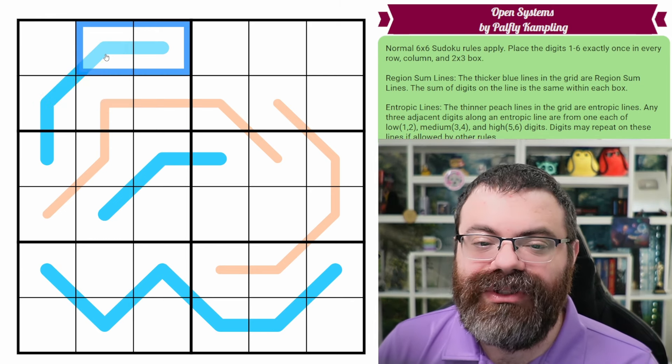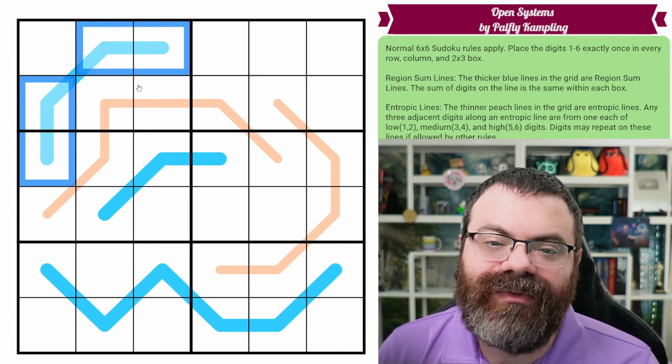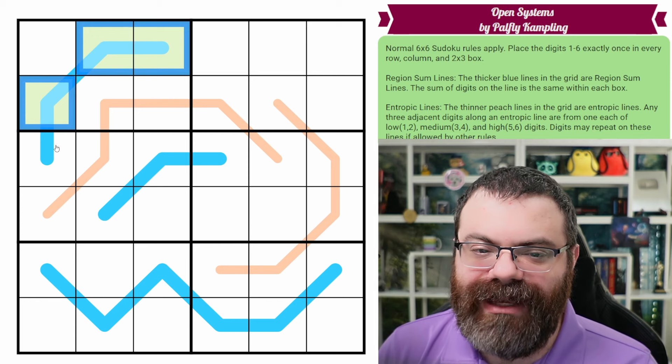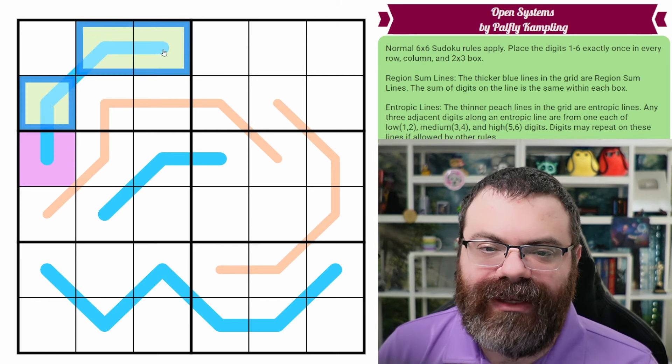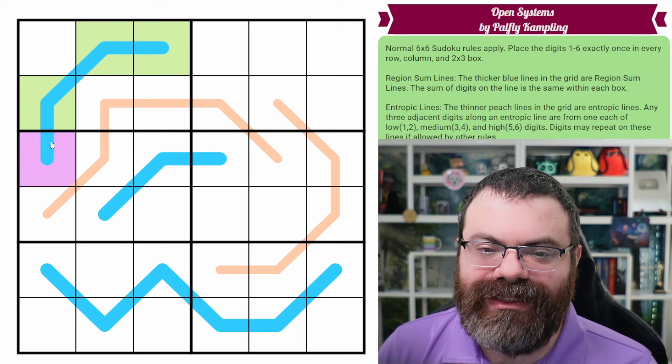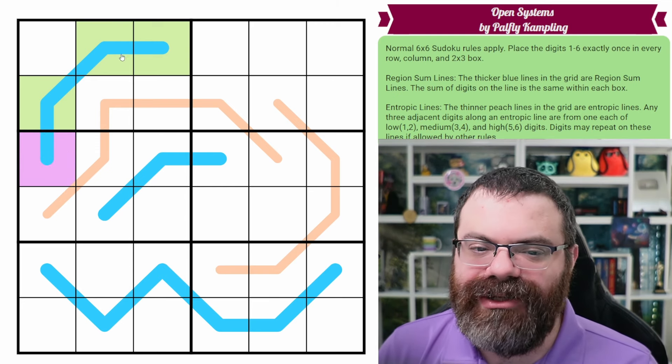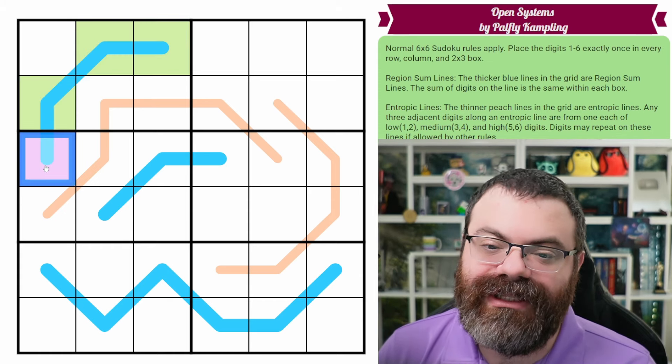We also have these blue lines in the grid. The thick blue lines are region sum lines. So what you do is you divide them up by which box they're in. So maybe I'll make that green and that purple just to show it's divided. So the line gets divided by which box it's in. And then within each box, the sum of the digits on the line are the same.